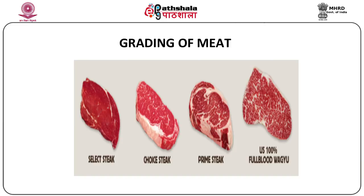There are three major grades of meat: the prime, the choice, and the select. Prime has the most marbling and is usually sold to high-end restaurants, specialty meat markets, and some supermarkets. It has the most desirable marbling, making it more palatable, as fat marbling gives the meat its tenderness and juiciness. Choice has a little less marbling than prime and is widely available in most markets. Select is the third grade, with the least amount of marbling, making it leaner and a little less juicy and flavourful compared to prime and choice.